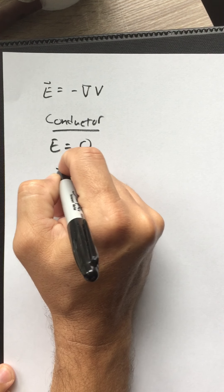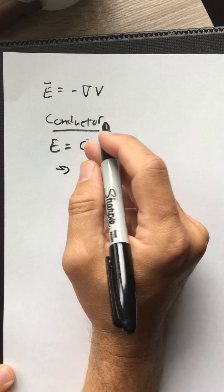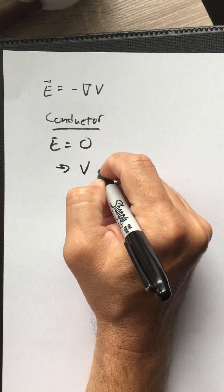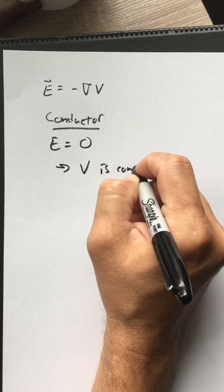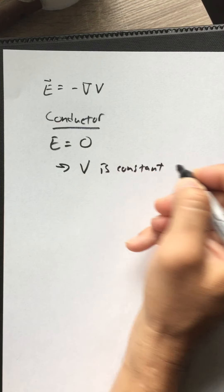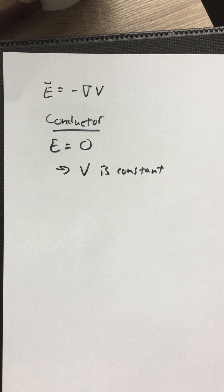This means unequivocally that the potential is constant on or in a conductor.